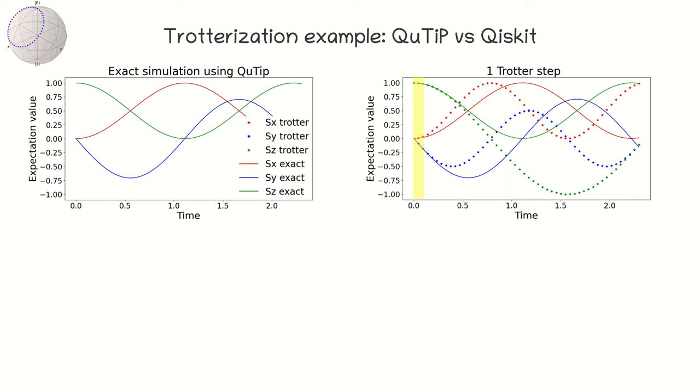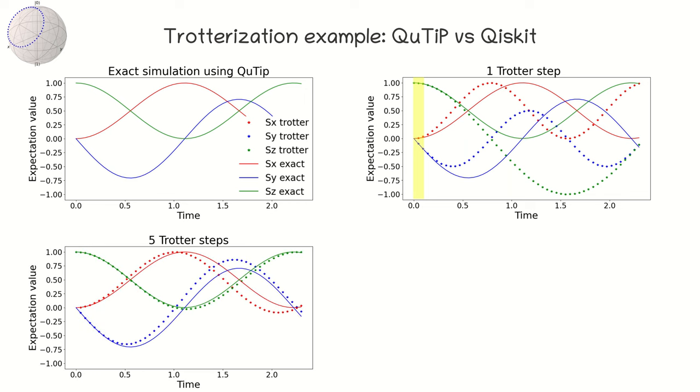Let's apply five trotterization steps. This means that we repeat rotations on the x and z axis five times with correspondingly changed rotation angles. In this case, the simulation of the evolution is slightly better. We have good agreement with the exact calculations over a longer time interval.